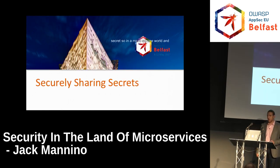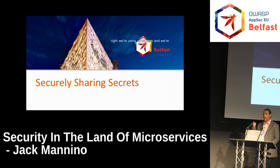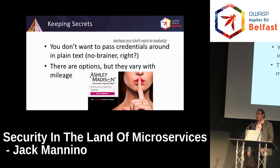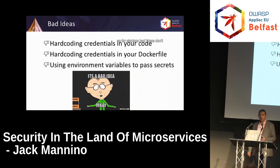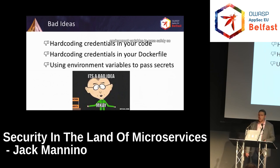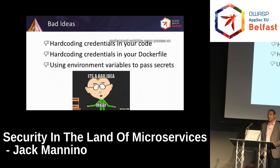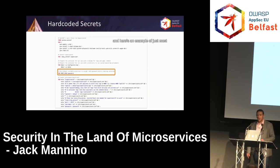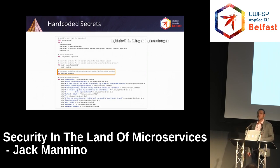The last topic is securely sharing secrets. In a microservice world, especially using containers and serverless functions, you don't want to pass secrets around in plain text. Bad ideas: don't hard-code credentials in your code, don't hard-code credentials in your Dockerfiles, and don't use environment variables to pass secrets. There's bad information on the web saying to use environment variables — but when you pass things with environment variables, every process on that container can read them. Here's the most egregious version: a Dockerfile with root password set to 'password'. Don't do this — you have better options.